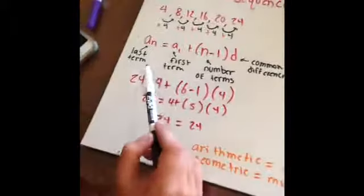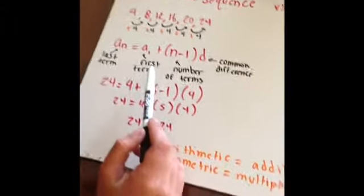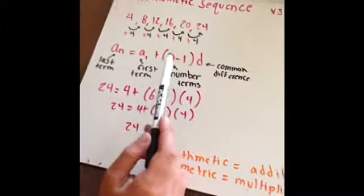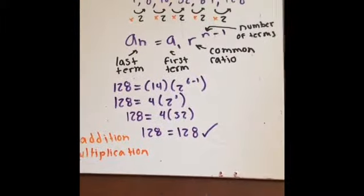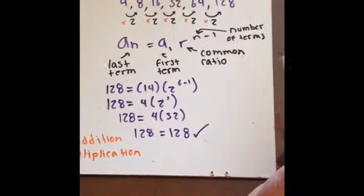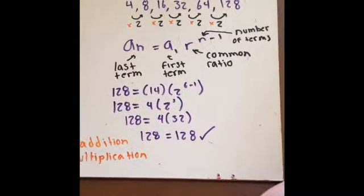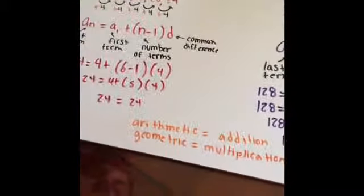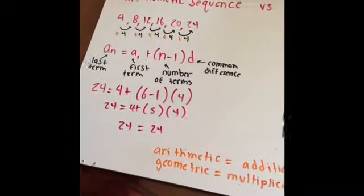There are different equations. Arithmetic sequence is AN equals A1 plus N minus one times D. Geometric sequence is AN equals A1 times R to the root of N minus one. That's the difference.